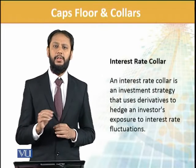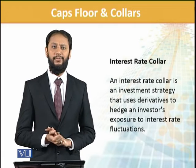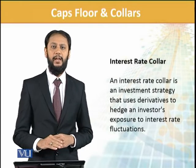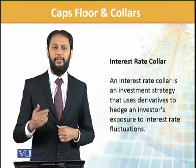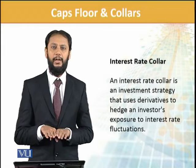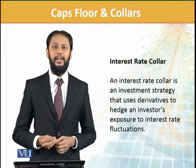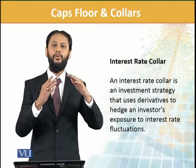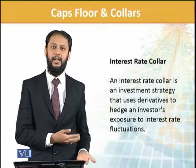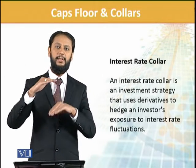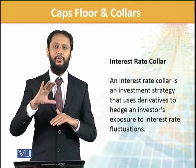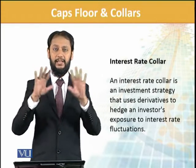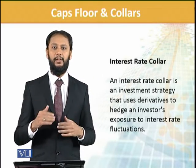Suppose rate हो गया 8.75, तो you'll pay bank 8.75 लेकिन option holder आपको 0.75 दे देगा, तो आप अपने आपको lock कर लेंगे 8 पे। इसके लिए definitely they will be charging एक premium. तो हम कहते हैं इस वक्त rate 7% है, नीचे जाए - अच्छी बात है। अगर 6 तक भी चला जाए तो very good, इससे नीचे जाने के chances भी कम हैं। तो हम 6 से नीचे वाला rate का एक floor sell कर देते हैं - we write a floor, जिससे हम अपने आपको 6 से नीचे नहीं जाने देते।